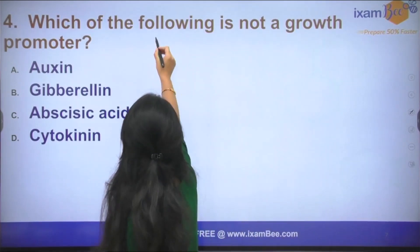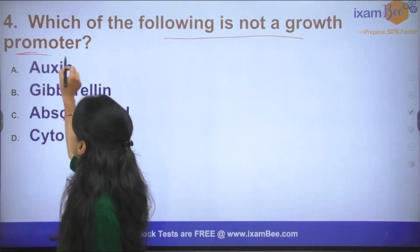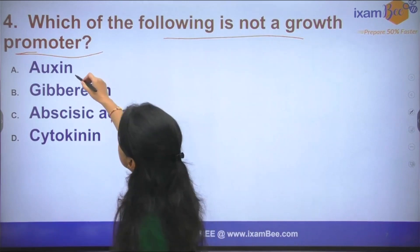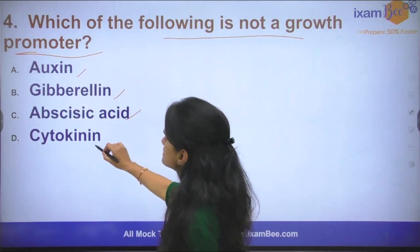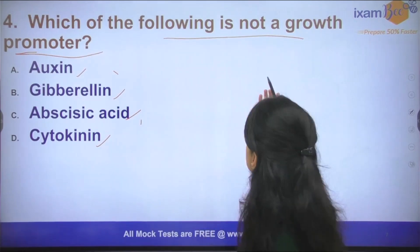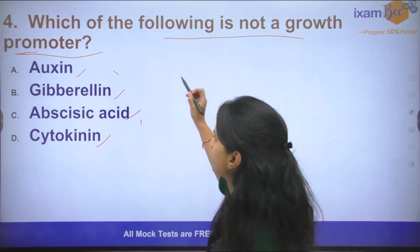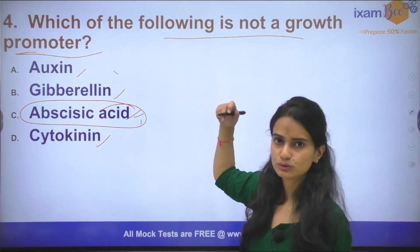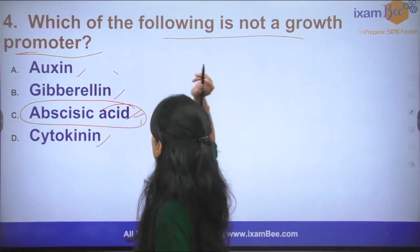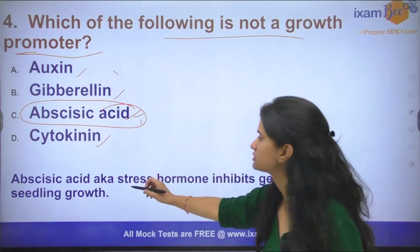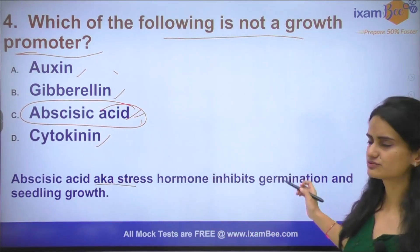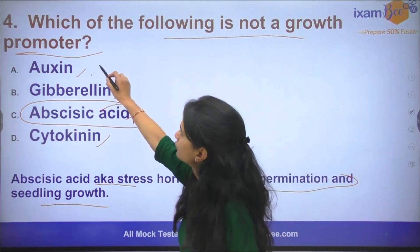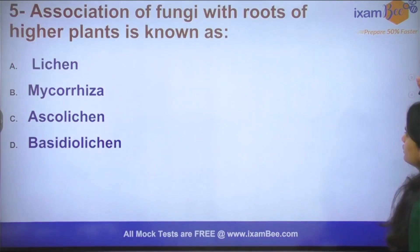The next question: Which of the following is not a growth promoter? We know that some hormones promote growth and some inhibit it. The options are auxin, gibberellin, abscisic acid, and cytokinin. Which of these is not a growth promoter — meaning it is an inhibitor? The answer is abscisic acid. Abscisic acid inhibits growth instead of promoting it. It is also known as the stress hormone and inhibits germination and seedling growth.